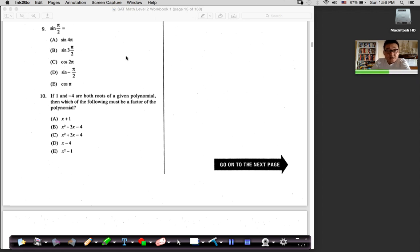Alright, let's move on to number 9. Okay, number 9 says sine pi over 2 is equal to, once again, look at the answer choices. Do you think I need a calculator? Punch it in and get whatever the value is? No, look at the answer choices.